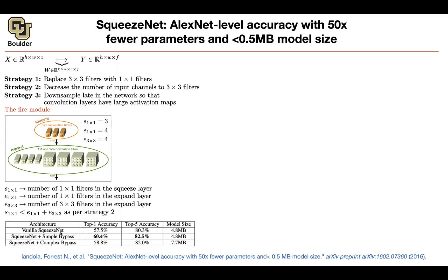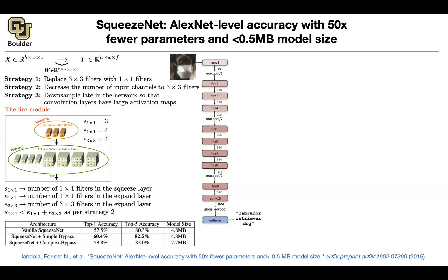At the macro level, the overall architecture starts with a convolution and max pooling with stride 2, followed by a series of fire modules interspersed with max pooling layers at stride 2, then another fire module, a convolution, 1000 outputs, global average pooling, and softmax. Simple bypass and complex bypass refer to residual connections — simple bypass adds X plus the output of the block; complex bypass first multiplies by a matrix to match dimensions.